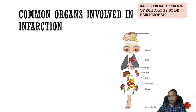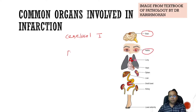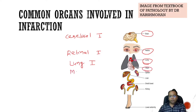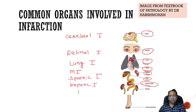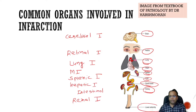These are the common organs that can be involved in infarction. In the brain, infarction is known as cerebral infarction. In the retina, it is known as retinal infarction. In the lung, it is pulmonary infarct. In the heart, it is myocardial infarction. In the spleen, it is splenic infarct. In the liver, it is hepatic infarction. In the bowel, it is intestinal infarction. In the kidney, it is renal infarction. In the extremity, there could be gangrene.